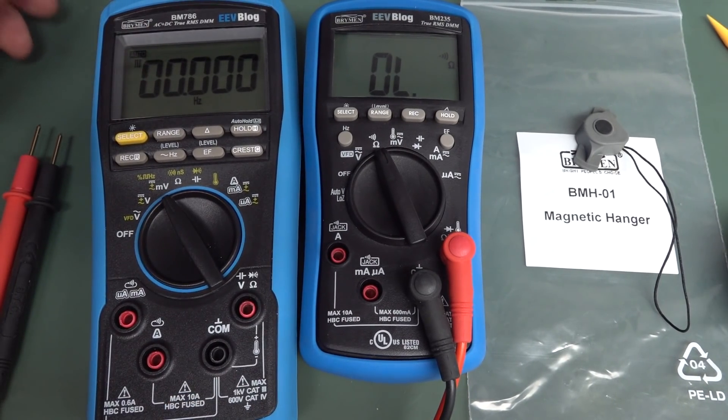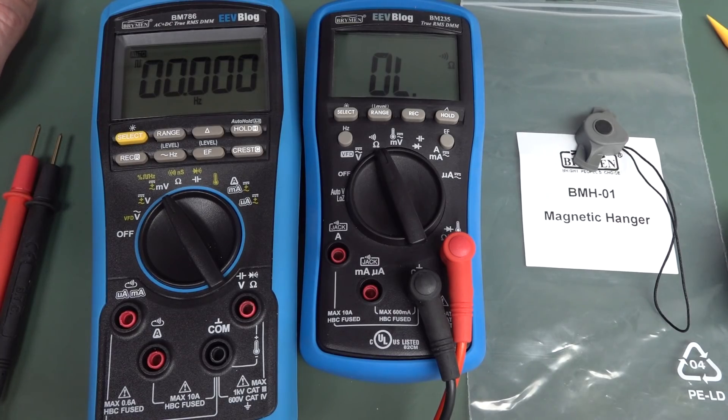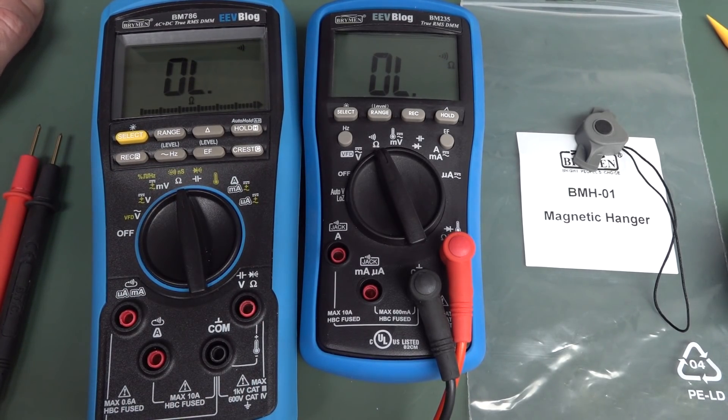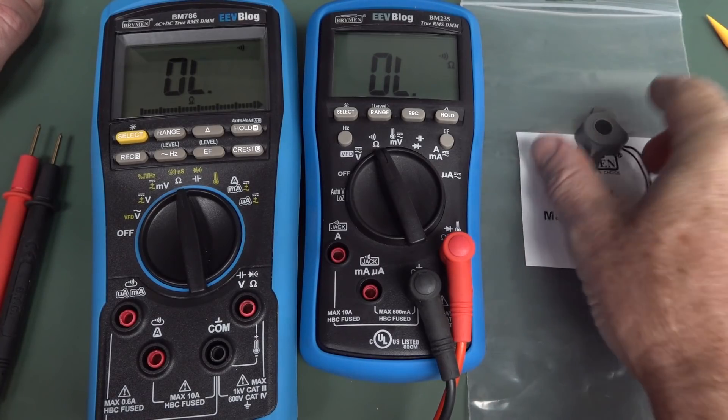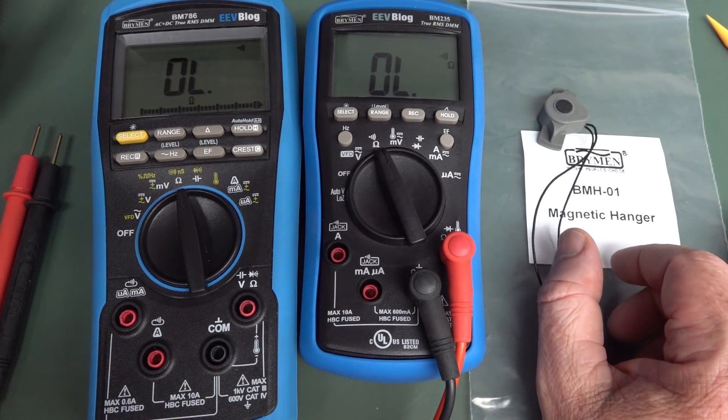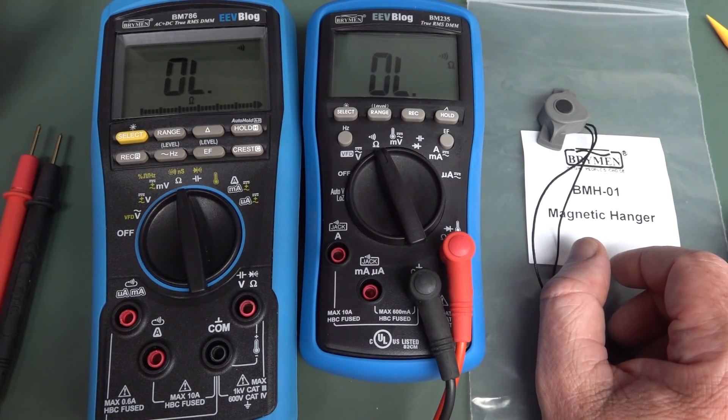So, I'll show this to Bryman and see what they think about that. But that's interesting. It's worth trying on your meter. Leave it in the comments down below if you've got a meter that you can actually make the continuity buzzer change just based on magnet.